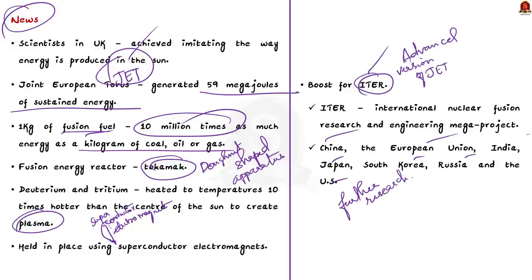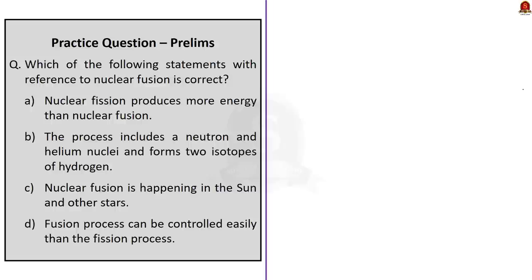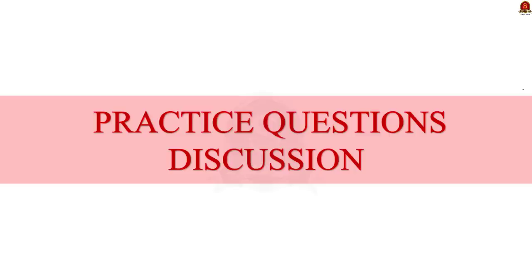In this news article, we saw what nuclear fusion is, why nuclear fusion cannot be controlled, some of the advantages of nuclear fusion, and some of the important points from the news article — including the JET facility milestone and ITER. With this we came to the end of the news article discussion and now move to the preliminary practice questions.